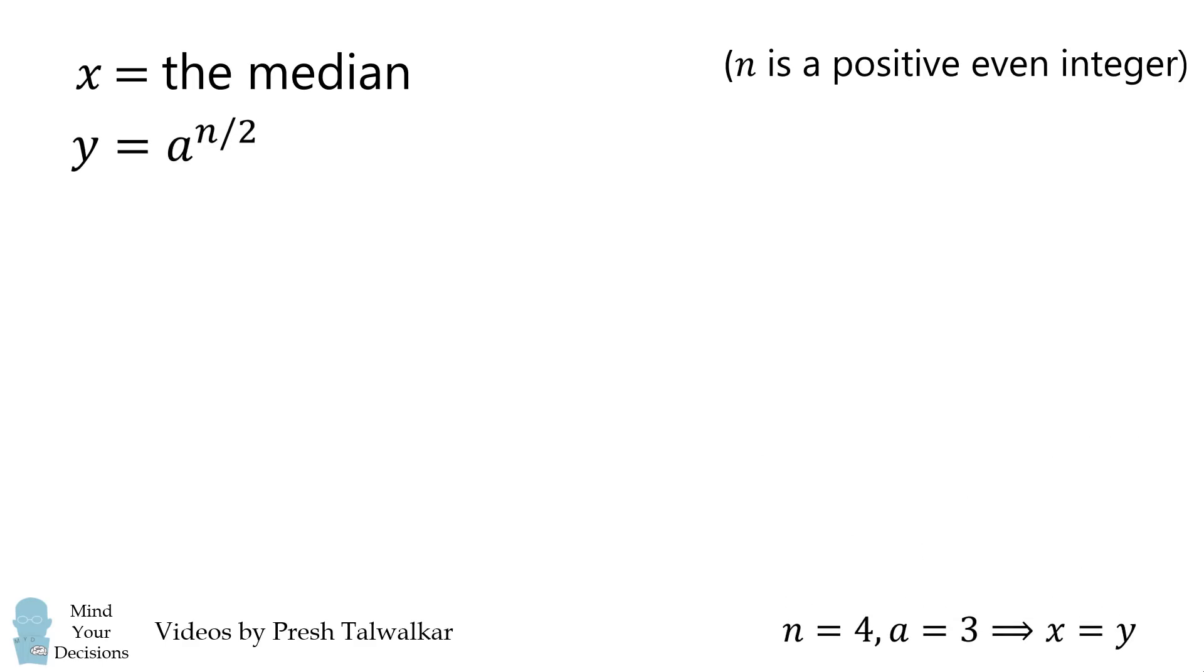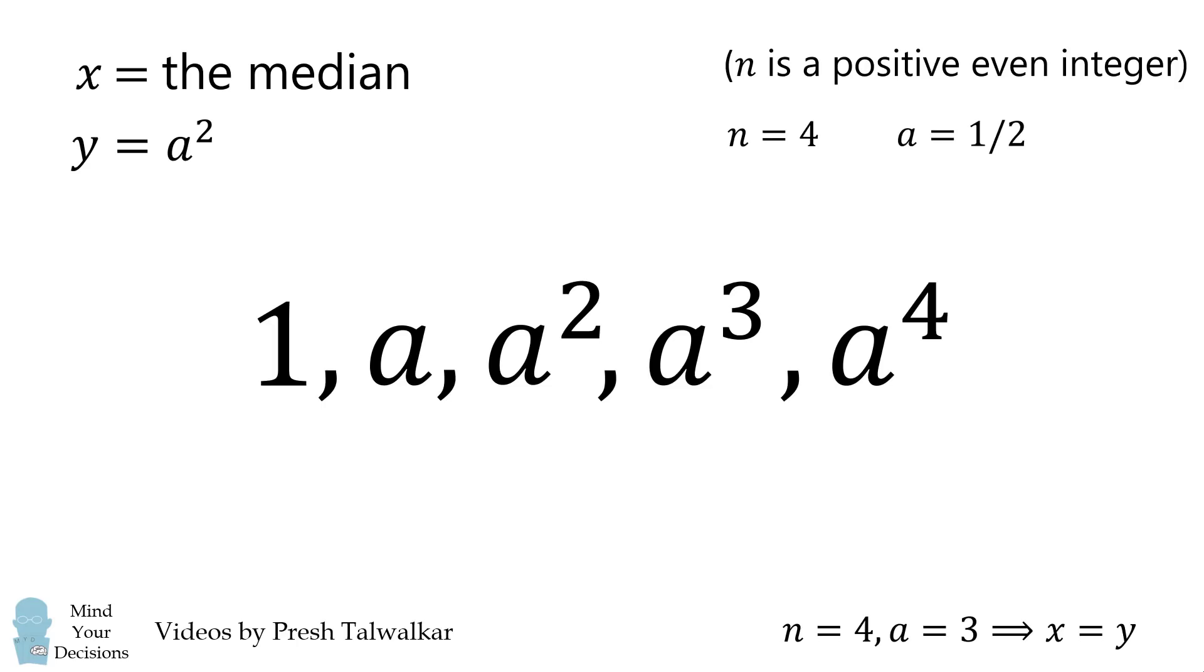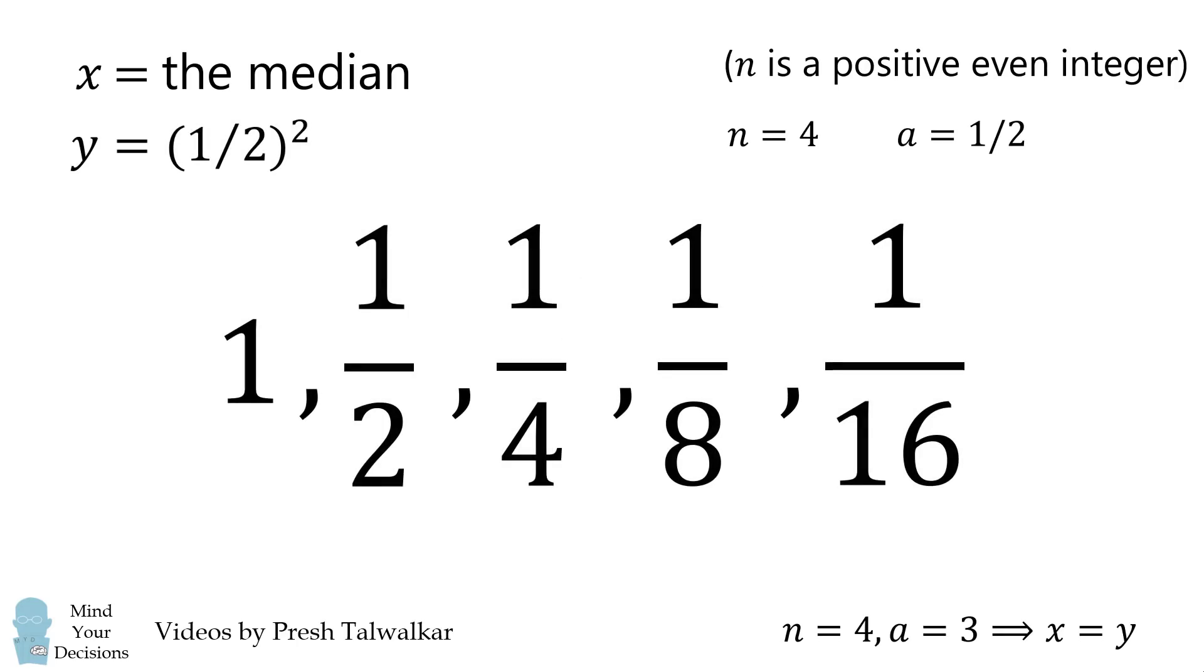Let's do another example. Let's again consider n is equal to 4, so that y is equal to a squared. Now, let's consider a is equal to 1 half. When we substitute in, we get a decreasing sequence.